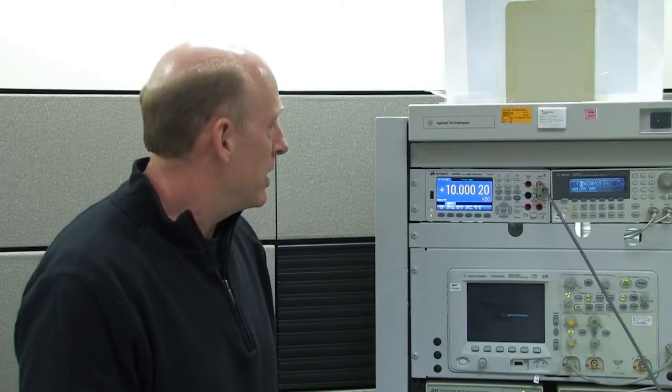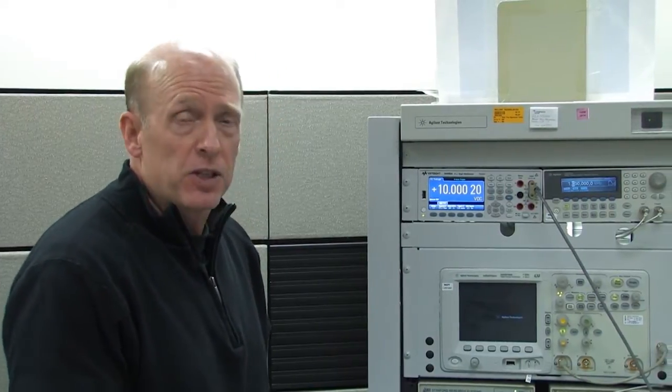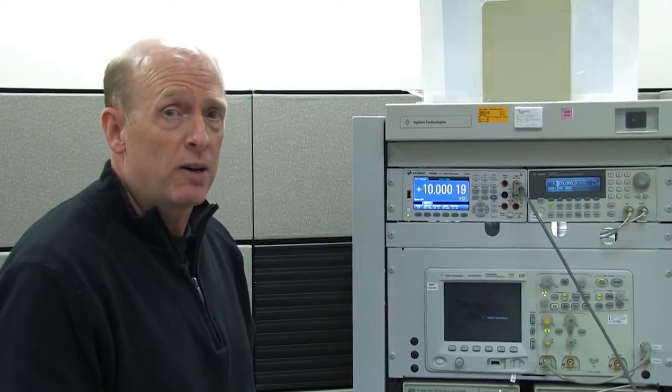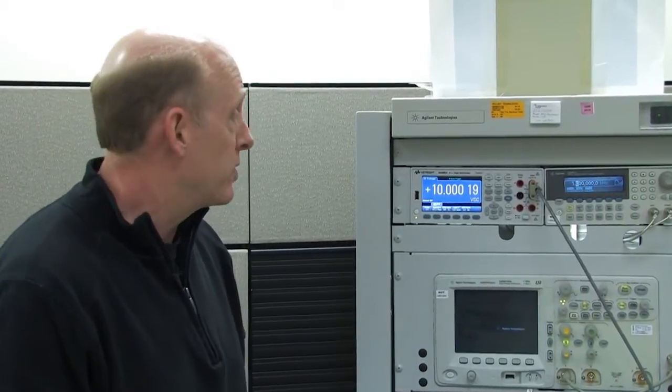We have installed the 34465A multimeter in the system rack and have allowed it to thermally stabilize. As you can see, given the same 10 volt source, we are seeing a reading difference of several counts.